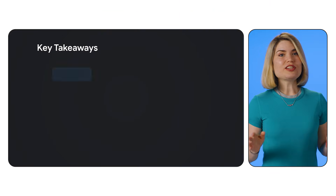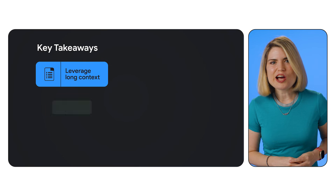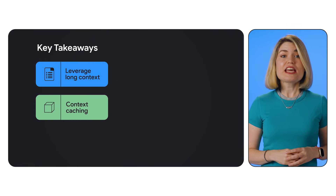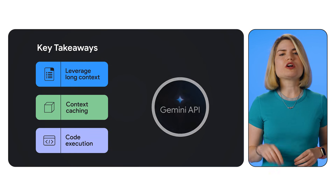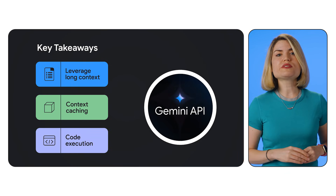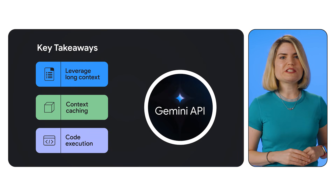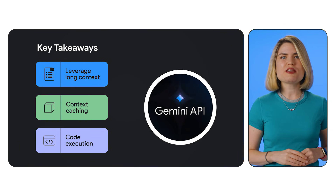This opens up exciting possibilities for automating tasks, building intelligent agents, and creating entirely new types of applications. Long context, context caching, and code execution are powerful tools that unlock the full potential of the Gemini APIs.